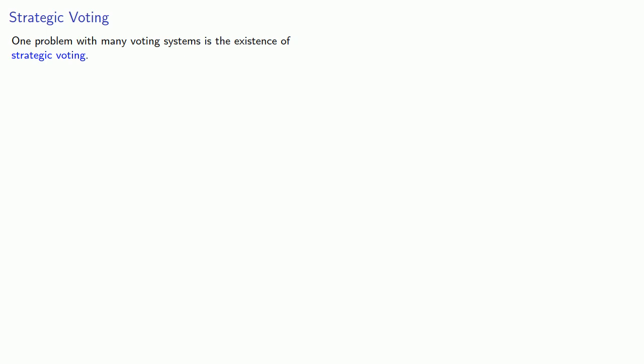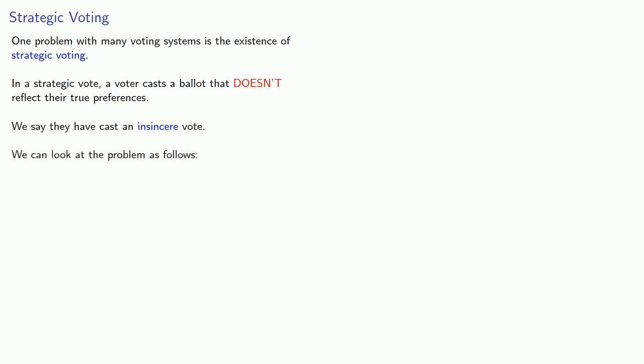One problem with many voting systems is the existence of what's called strategic voting. In a strategic vote, a voter casts a ballot that doesn't reflect their true preferences. We say they have cast an insincere vote. We can look at the problem as follows.